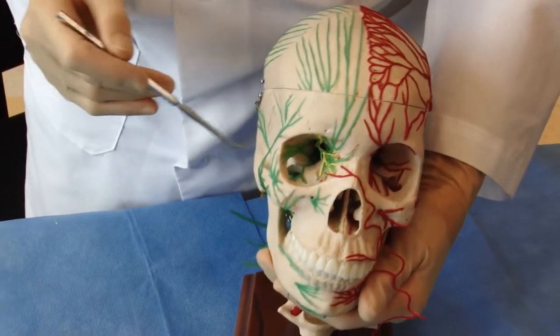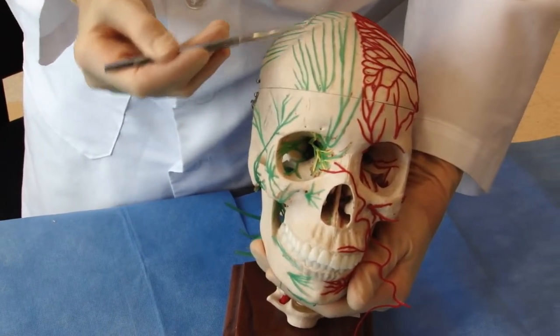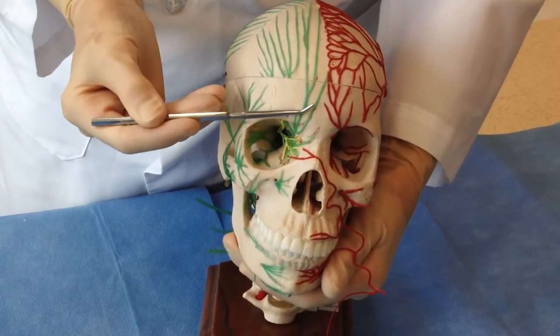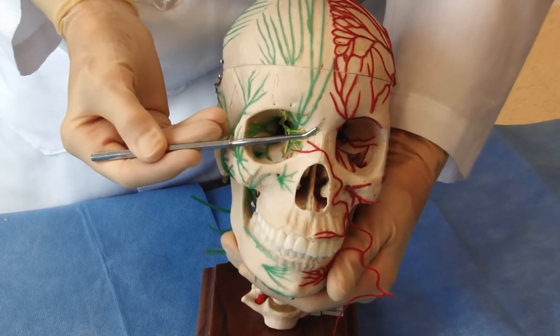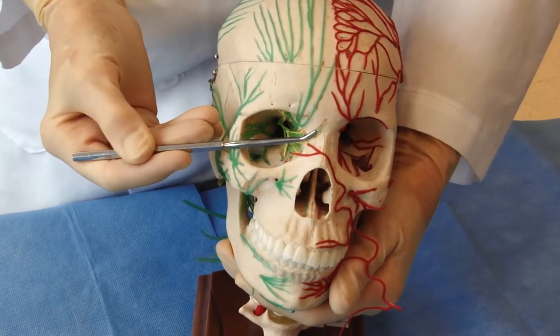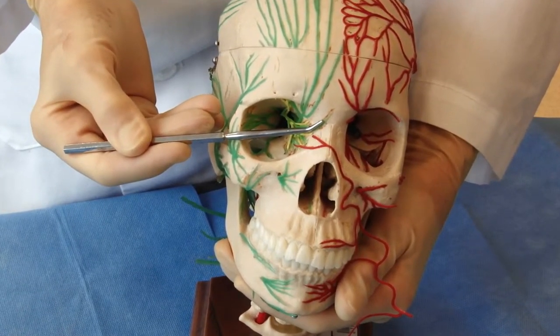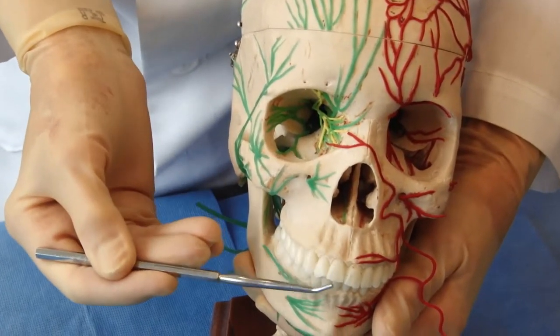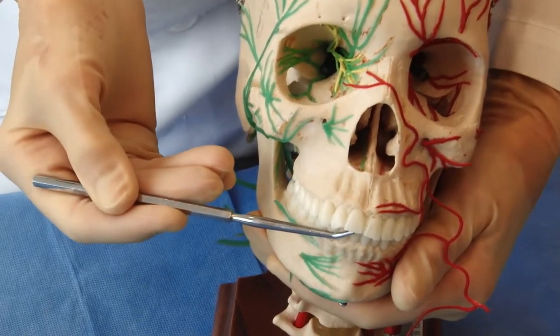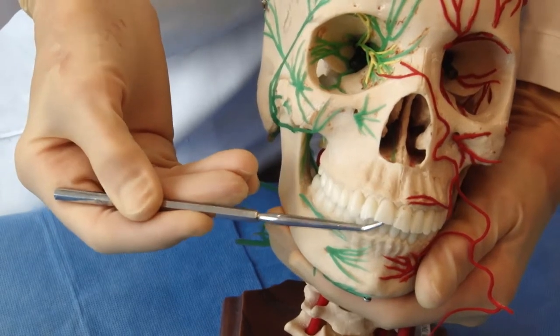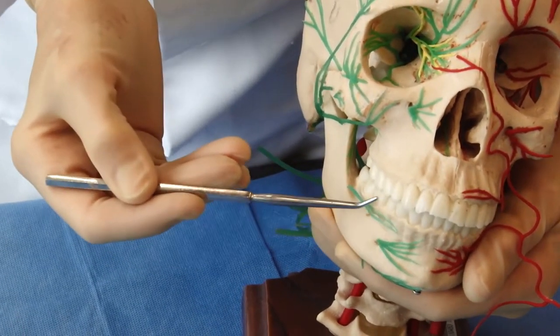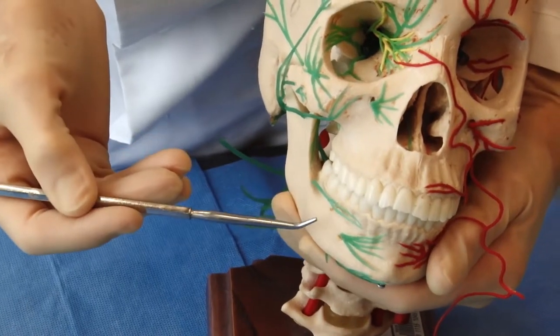So the trigeminal nerve has three branches. From the vertex here, we have branches all the way down to the orbit, in the middle of the orbit, and we call that the ophthalmic division. Then below that, there is the maxillary division, which includes innervation of the teeth and the gums. And below that, we have the mandibular division, and also includes the lower jaw, teeth, and gums.